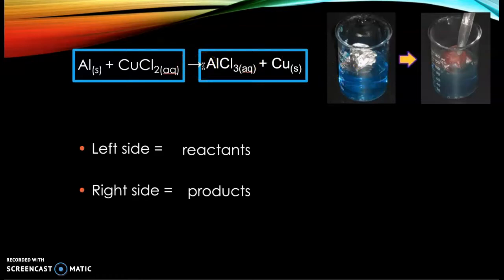That's going to react to form aluminum chloride and copper solid, which is kind of neat. You put these two things together and there's a chemical reaction taking place. You can see there's a color change and it's not going to be reversible. Left-hand side is reactants, right-hand side is products.